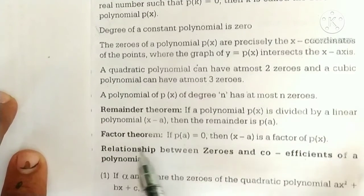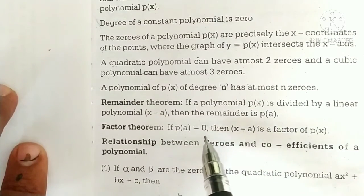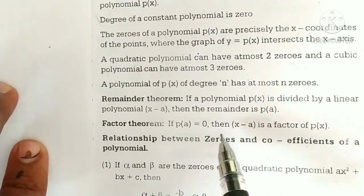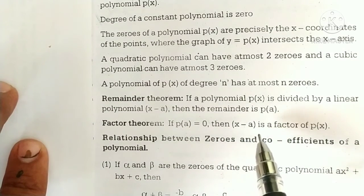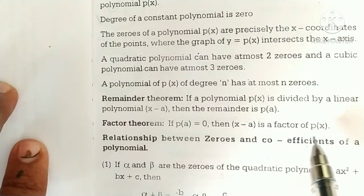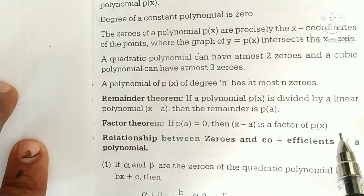Factor theorem: if p of a is equal to 0, then x minus a is a factor of p of x.